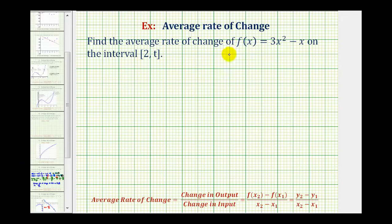We want to find the average rate of change of f(x) = 3x² - x on the closed interval from 2 to t. What's different about this example is the interval contains a variable, but we'll follow the same steps.